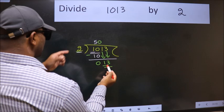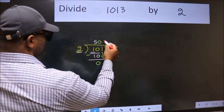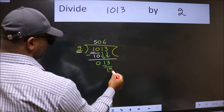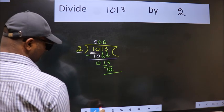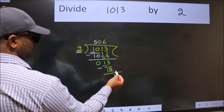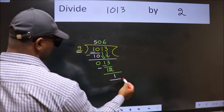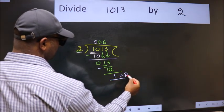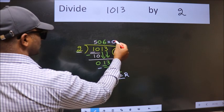A number close to 13 in 2 table is 2 6 12. Now we subtract. We get 1. No more numbers to bring it down. So we stop here. This is our remainder and this is our quotient.